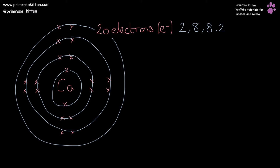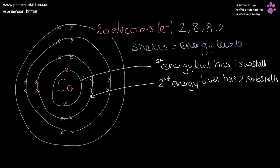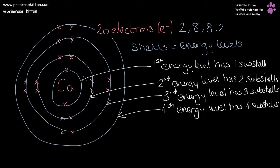We need to make this model a little bit more sophisticated now. From now on, shells are going to be energy levels, and each energy level has subshells. The first energy level has one subshell, the second has two, the third has three, and the fourth has four. The first subshell has the lowest energy, and as we move away from the nucleus the energy levels within the shells get higher. The first energy level has the S subshell; the second has S and P; the third has S, P, and D; and the fourth has S, P, D, and F.